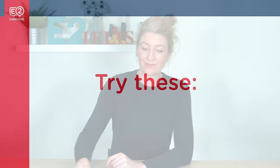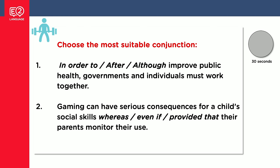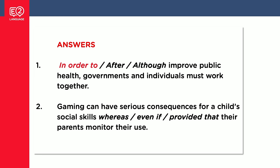Now that we've sorted that out, try these. I'm going to give you some questions — choose the right word that makes sense to create complex sentences. And here are the answers: 'In order to improve public health, governments and individuals must work together.' Number two: 'Gaming can have serious consequences for a child's social skills, even if their parents monitor their use.'